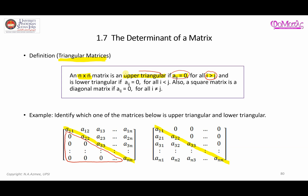This is the definition of an upper triangular matrix. The values on and above the main diagonal can be non-zero or even zero — it doesn't matter. What matters is that all values below the main diagonal are zero.